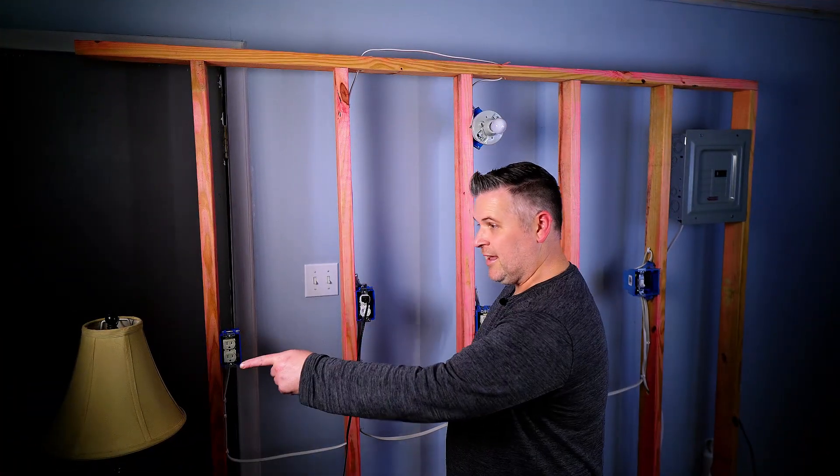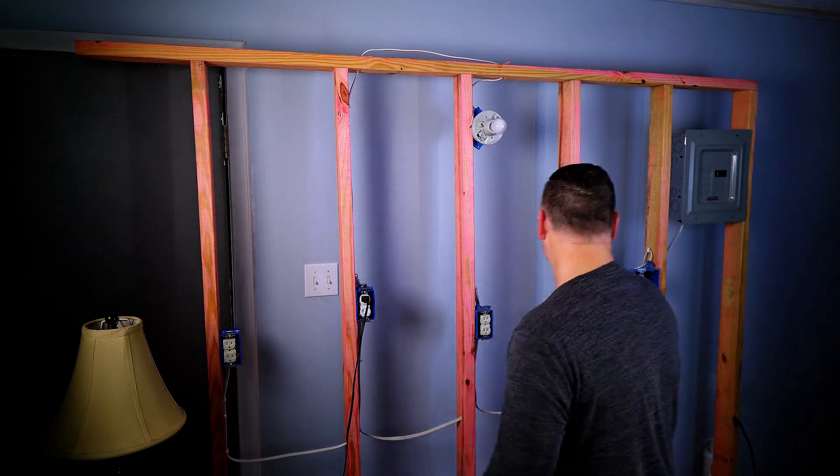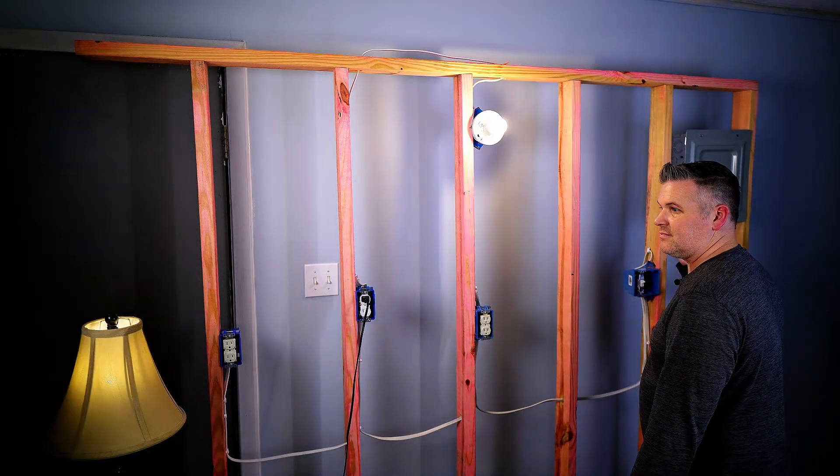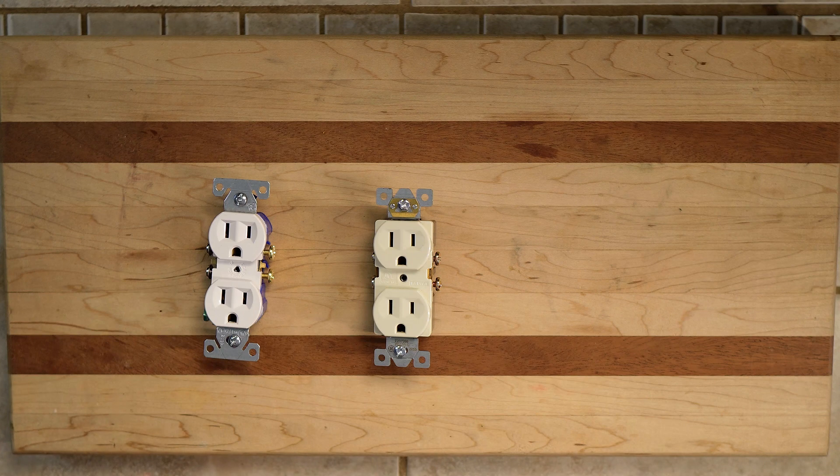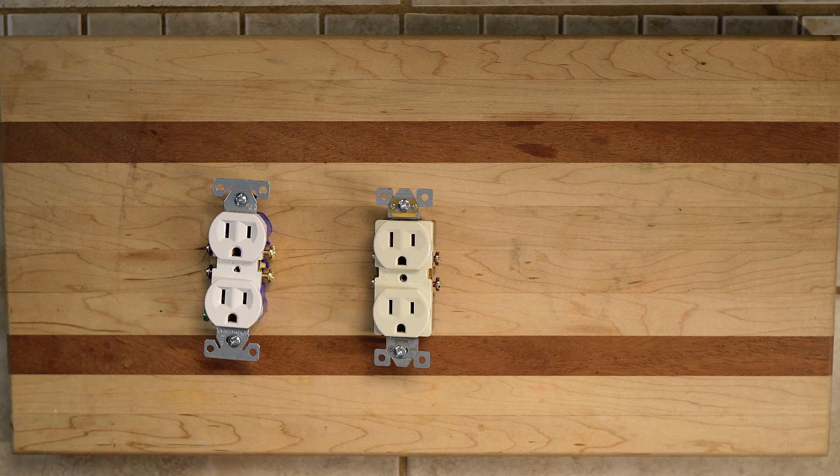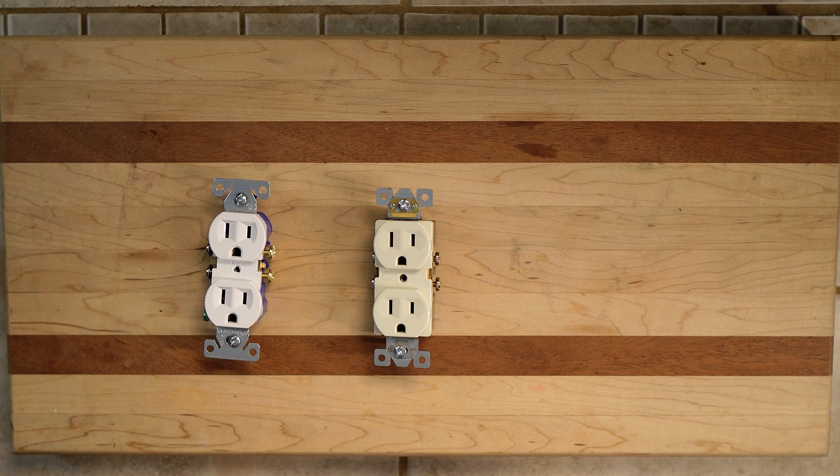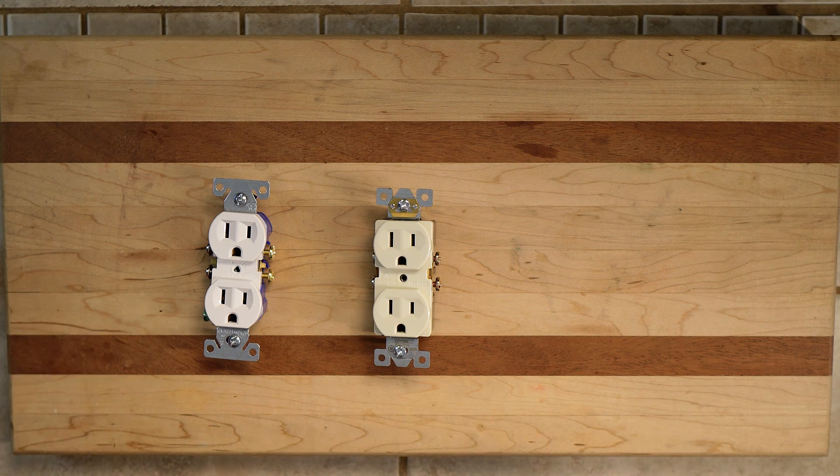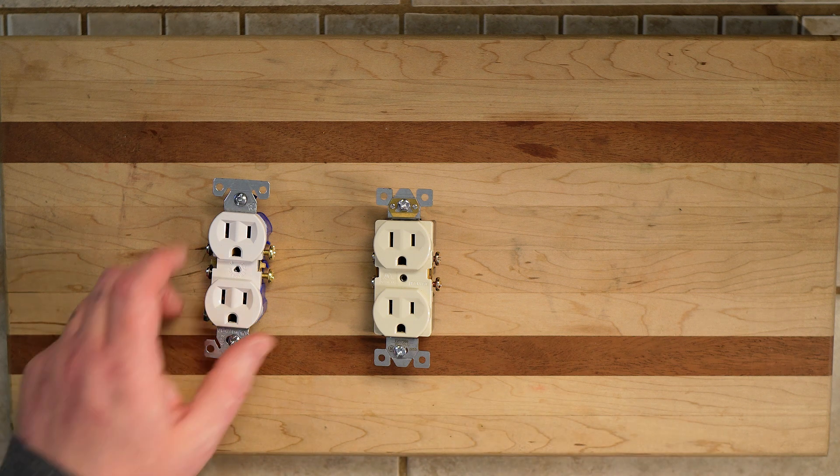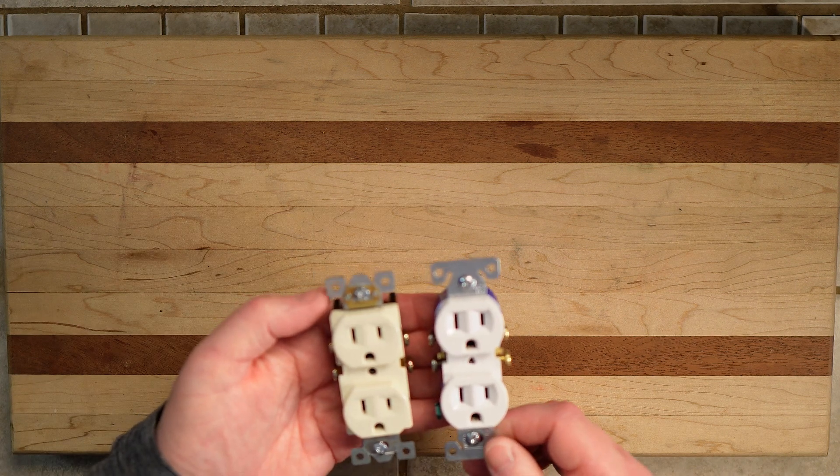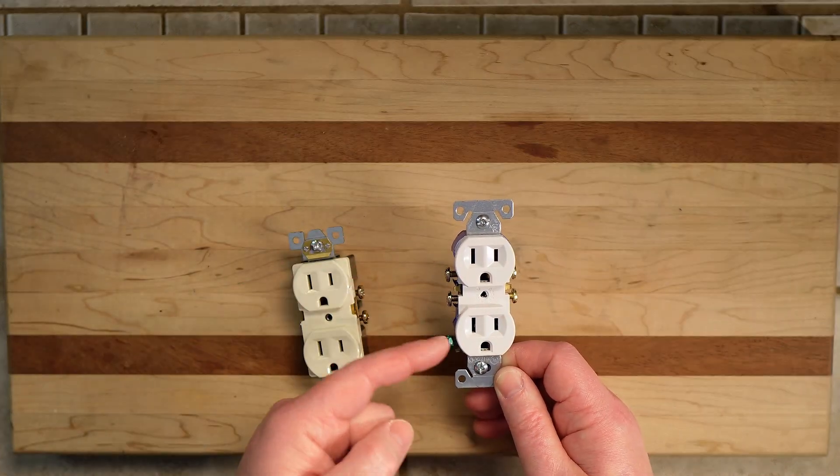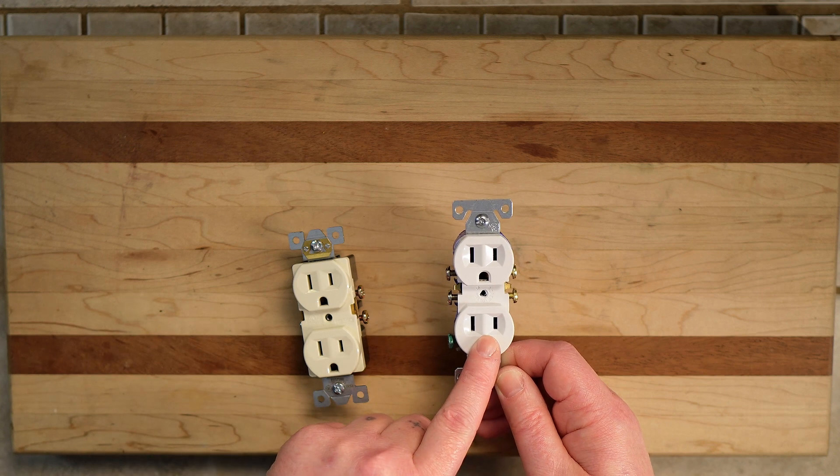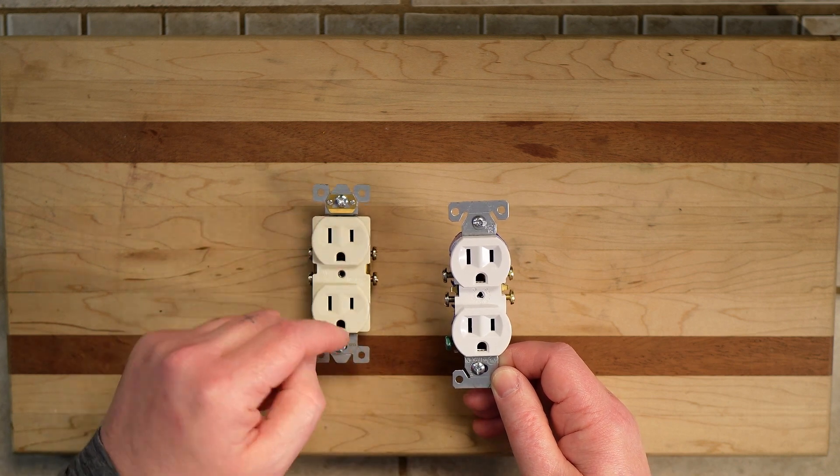This light should come on and this lamp should come on. So what I've got here is two 15 amp outlets. They look different because they're from different manufacturers. They both do the same things. Switching outlets, the top is going to be switched and the bottom is going to have continuous power. And I'm going to do that on both of these.